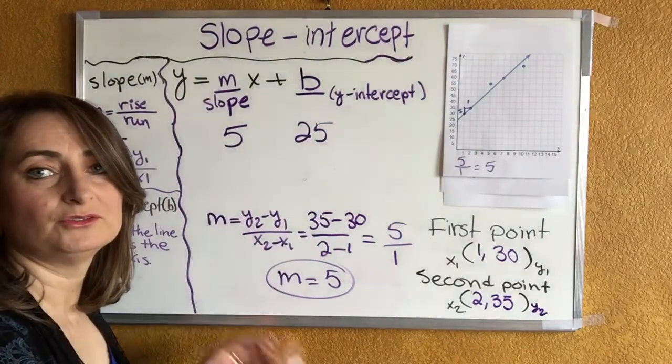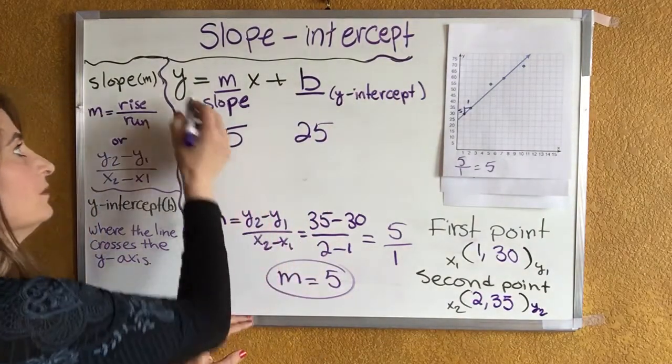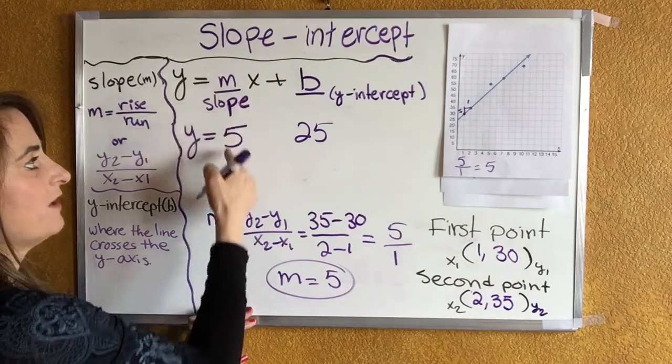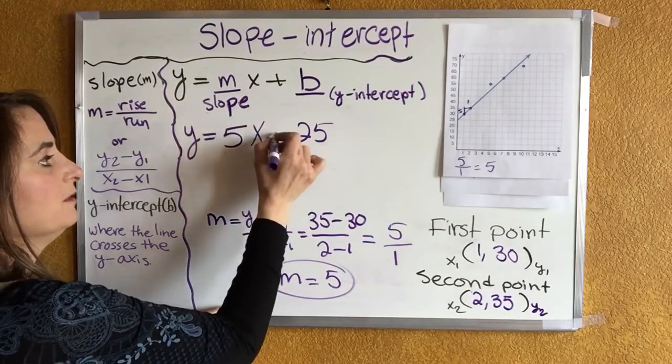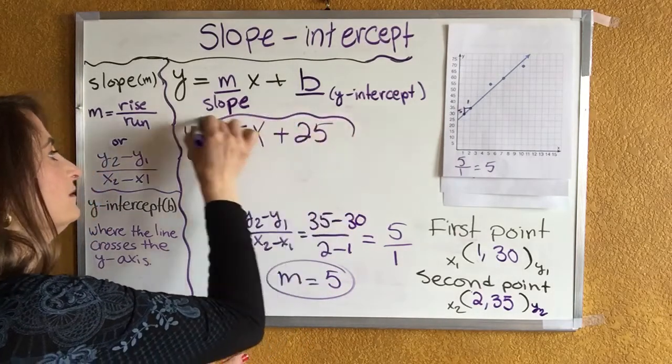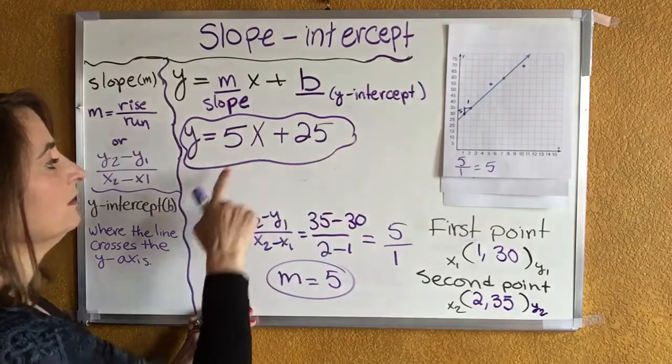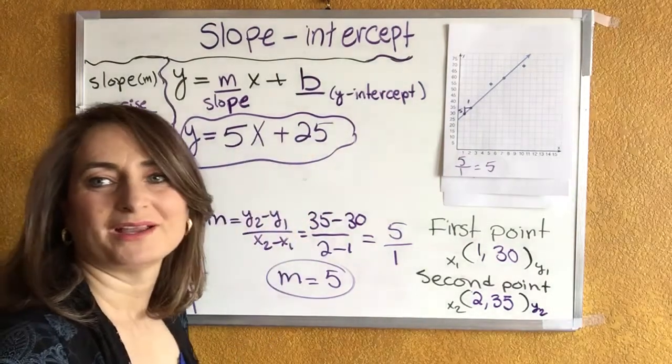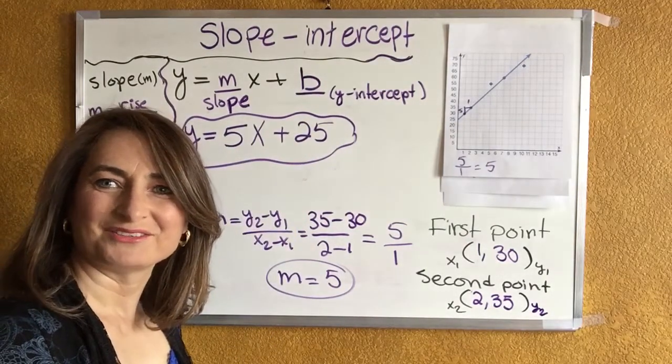Now all you have to do is bring everything in the equation down. So y equals 5, bring the x down, plus 25 which is the y-intercept. This is it in slope-intercept form: 5 is the slope and 25 is the y-intercept. You guys have a great day.